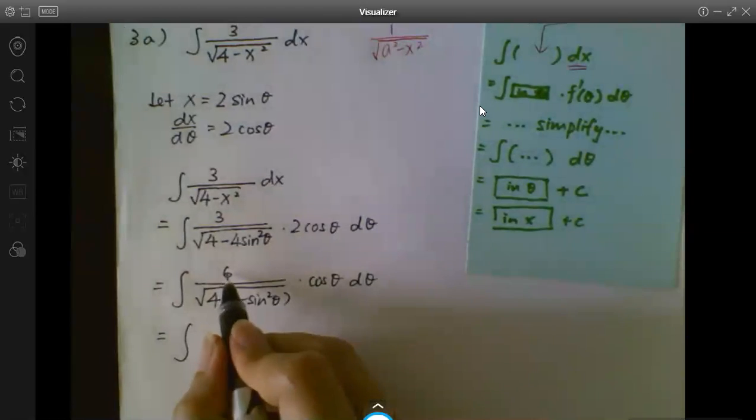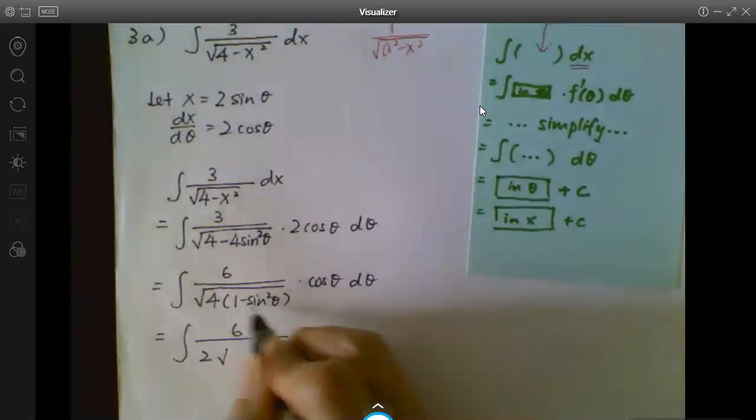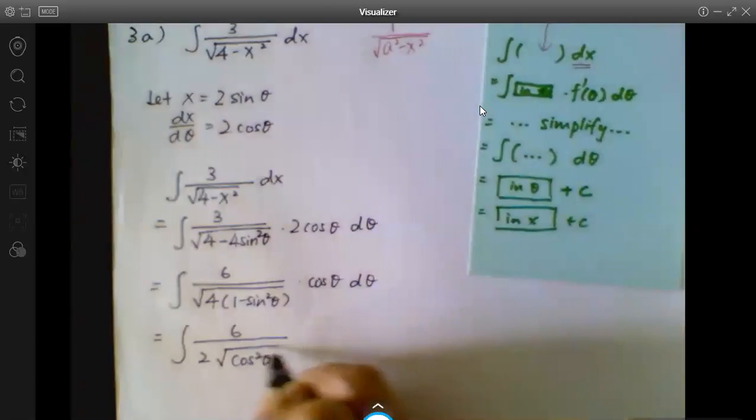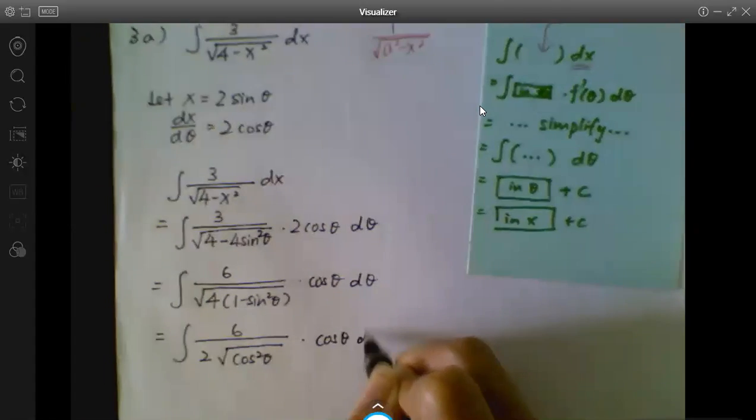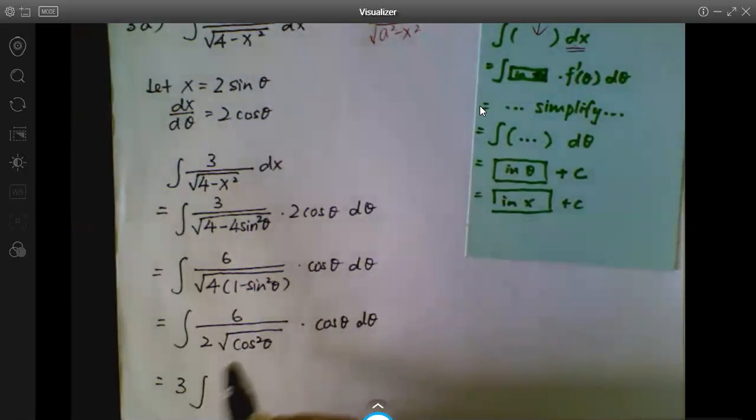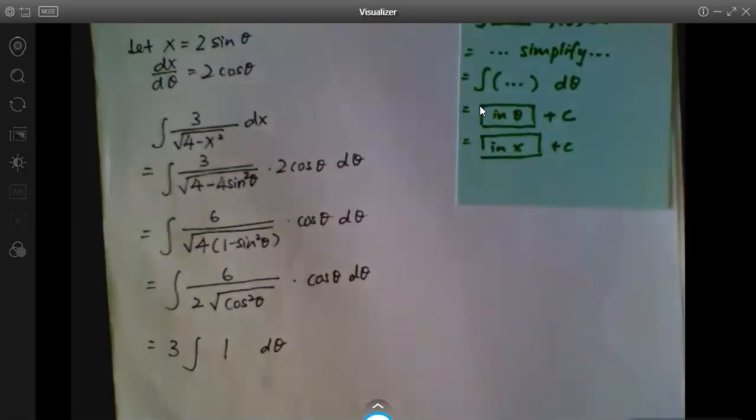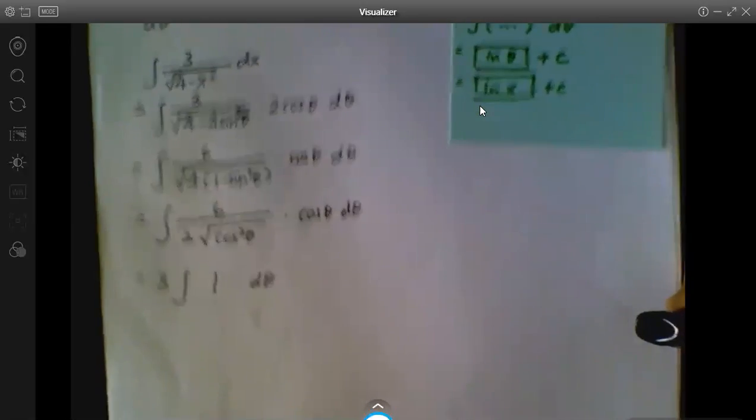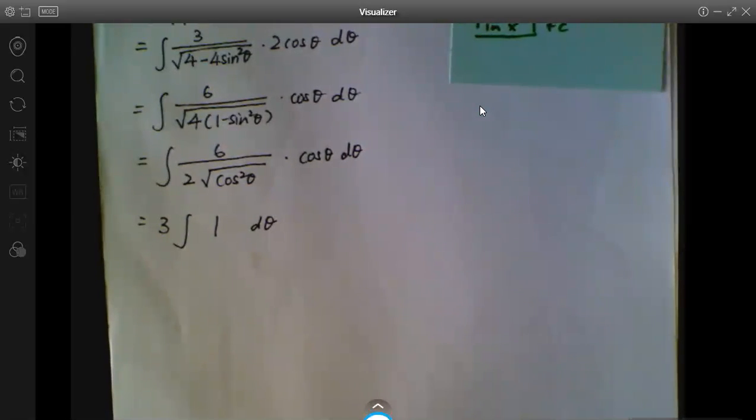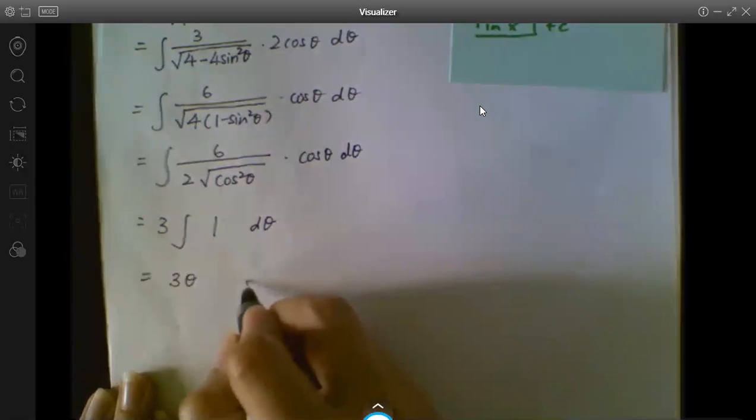So next step, 6, and then I take out the square root of 4, it becomes a 2. 1 minus sin²(θ) is cos²(θ). Alright. 6 over 2 is 3. The square root of cos²(θ) is cos(θ), it will cancel out with cos(θ) on top. So it leaves us with 1. After that, we can integrate 3. Integrate 1 is θ, so we have 3θ plus c.